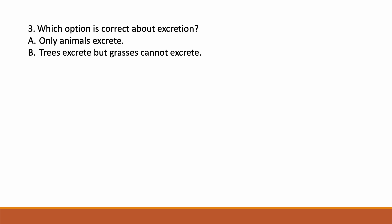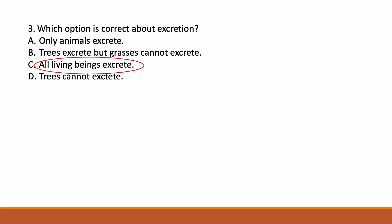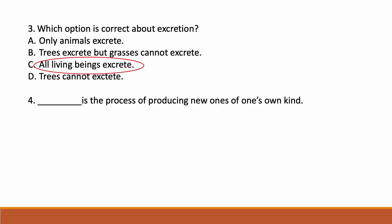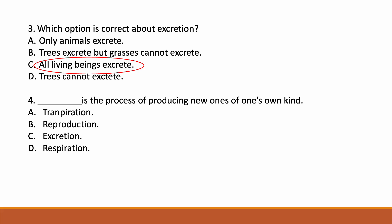Option B: Trees excrete but grasses cannot excrete. Option C: All living beings excrete. Option D: Trees cannot excrete. Correct answer is Option C — all living beings excrete. Fourth one: blank is the process of producing new ones of the same kind. Options are transpiration, reproduction, excretion, respiration. Correct answer is reproduction.